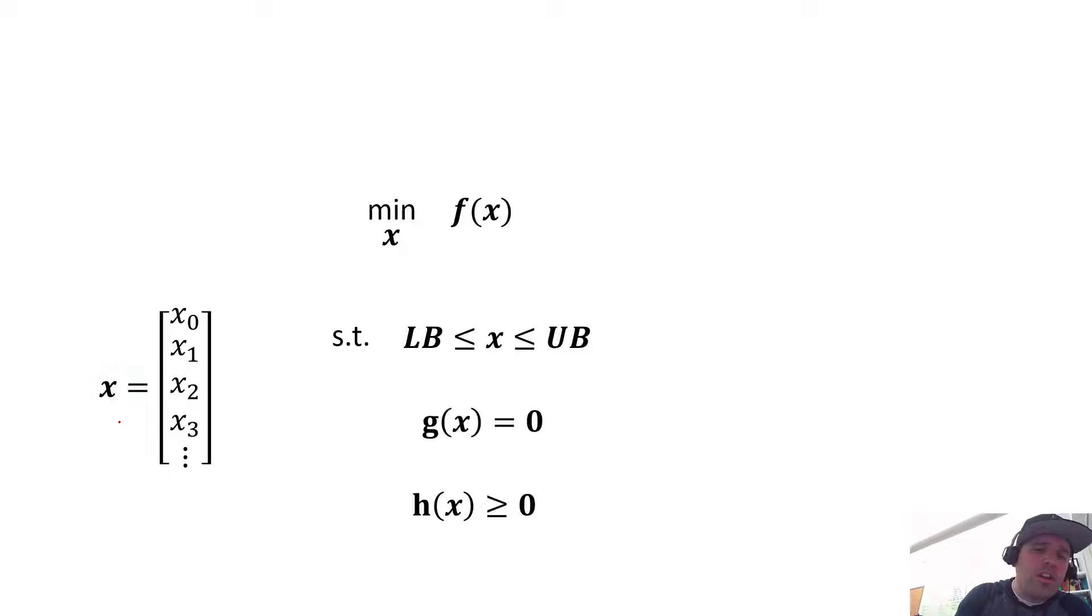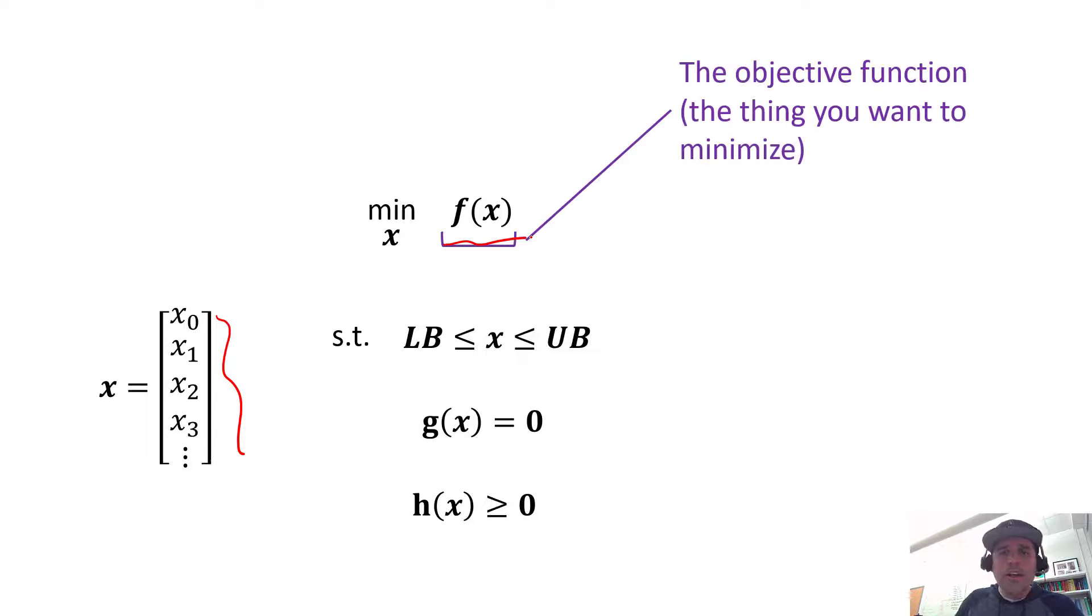The combination of all the different decisions you make go into this vector. This f(x) is the objective function, the thing you're trying to minimize. You formulate the objective function so that it's a function of all your decision variables. If you're confused, we're going to get to some practical applications in the following videos.